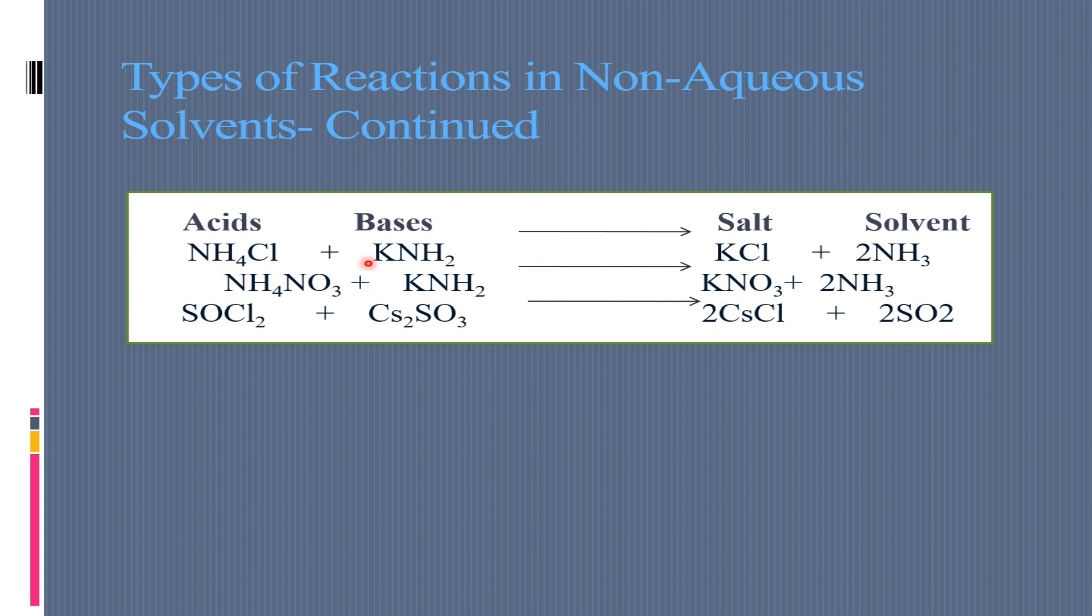Then we have some other examples of acids and bases. For example, we have ammonium chloride. It will react with potassium amide. We will get the salt, potassium chloride plus two NH3. Ammonium nitrate plus KNH2 in NH3.